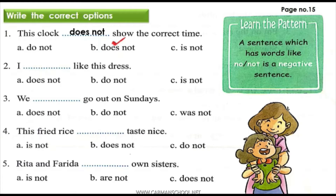The answer is: I do not like this dress. Third: we dash go out on Sundays — the answer is: we do not go out on Sundays. Are you all writing? Please put the tick also and write the correct answer. This fried rice dash taste nice.